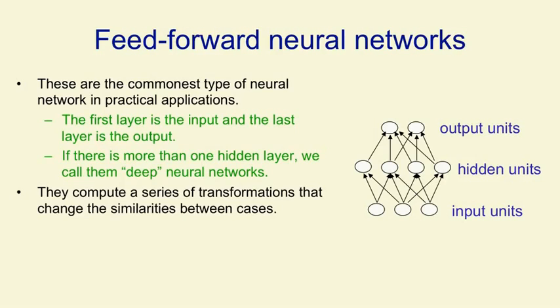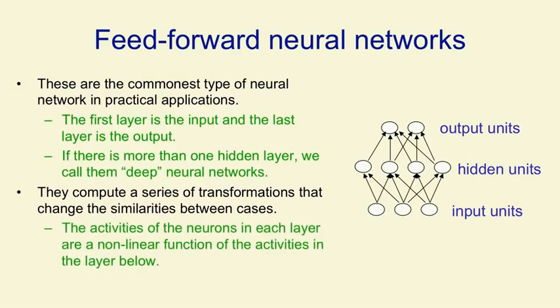Or things that were dissimilar in the previous layer may have become more similar. So in speech recognition, for example, we'd like the same thing said by different speakers to become more similar, and different things said by the same speaker to become less similar as we go up through the layers of the network. In order to achieve this, we need the activities of the neurons in each layer to be a non-linear function of the activities in the layer below.